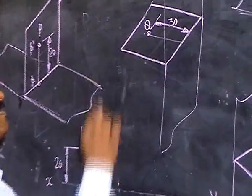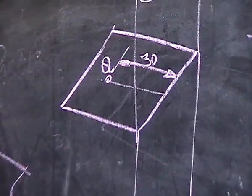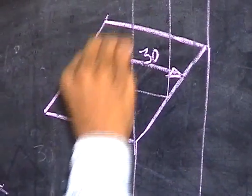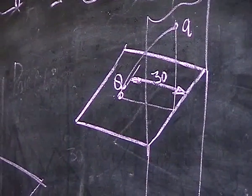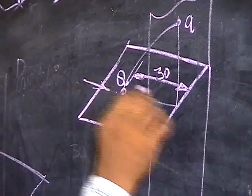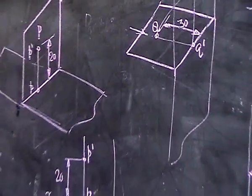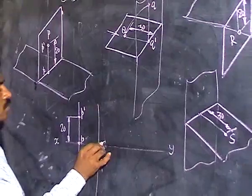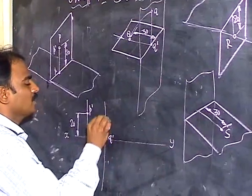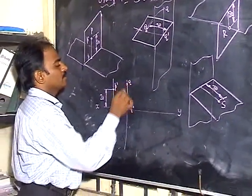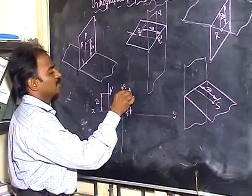Take point Q. Point Q is 30mm behind VP. Behind VP means it should come above the x-ray line in the top view. So place small q at 30mm above the x-ray line and give the distance as 30mm. The front view Q' should lie on the x-ray line because there is no height for that point. So take a reasonable distance, draw one more line, and since point Q has no height, put Q' on the x-ray line.